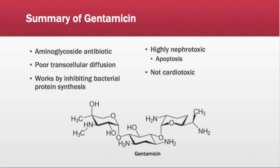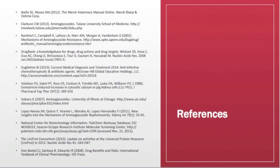To summarize, gentamicin is an aminoglycoside antibiotic with poor transcellular diffusion, especially across the GI epithelium. Gentamicin works by inhibiting the 30S subunit of the bacterial ribosome to stop protein synthesis. Gentamicin is highly nephrotoxic and can induce apoptosis by various mechanisms. Further, gentamicin is not cardiotoxic. Thank you.